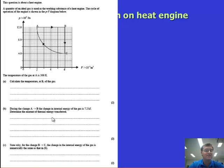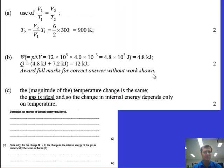During the change A to B, the change in internal energy of the gas is 7.2 kilojoules. Determine the amount of thermal energy transferred. The third question is state why change B to C, the change in the internal energy of the gas is numerically the same as that in part B. Let's take you through some answers here. First of all, if we recognize that the pressure is constant, that means the ratios of the initial volume over initial temperature divided by the final volume and the final temperature are going to allow us to work an unknown, and that means that the temperature is going to be 900 Kelvin.